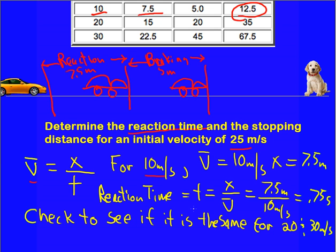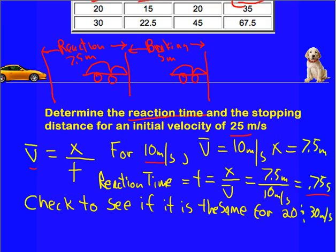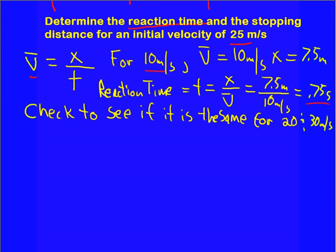And so the reaction time, t, is just the distance over the average velocity, 7.5 meters over 10 meters per second, 0.75 seconds. You should check to see if that is the same for the other two speeds given in the table.